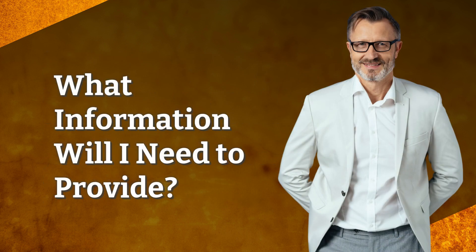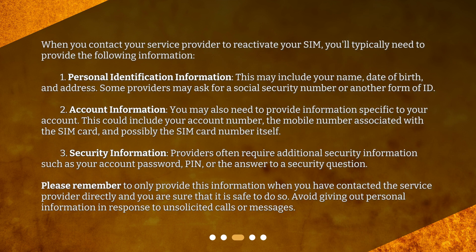What information will I need to provide? When you contact your service provider to reactivate your SIM, you'll typically need to provide the following information. 1. Personal Identification Information — this may include your name, date of birth, and address. Some providers may ask for a social security number or another form of ID. 2. Account Information — you may also need to provide information specific to your account, such as your account number, the mobile number associated with the SIM card, and possibly the SIM card number itself.